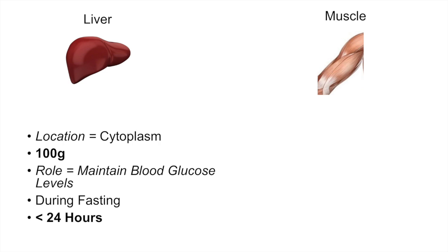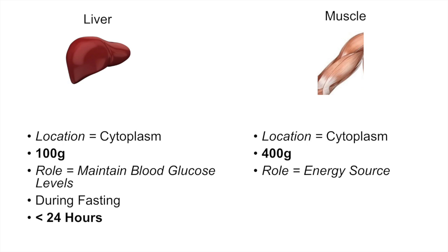This reservoir of glycogen in the liver usually only lasts for about 24 hours or a little bit less, and its main role is to maintain blood glucose levels. In muscle, glycogen is also stored in the cytoplasm, and in totality across all muscle tissue it comes out to about 400 grams. Its role in muscle is as an energy source, utilized during exercise. During acute periods of exercise, you begin to use muscle glycogen stores as a rapid source of glucose and rapid source of energy.